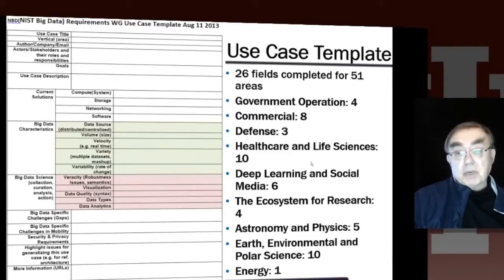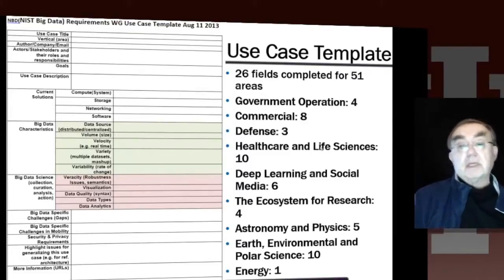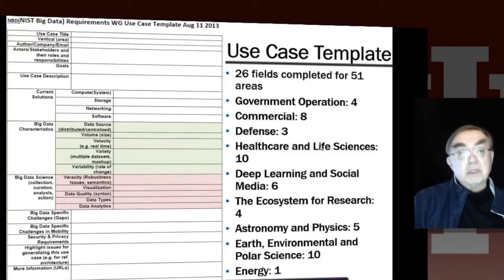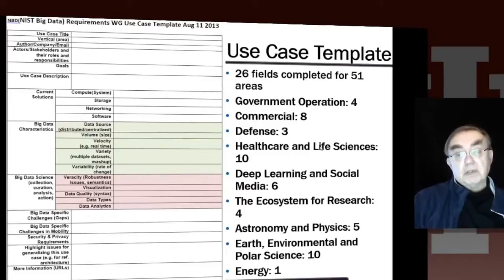These numbers should not be taken seriously as indicators of the importance of big data in certain areas. They just represent who filled in our form. This was all done over roughly six weeks, because we didn't really have the form until the middle of July, and then we started winding down at the end of August to summarize. So this was six weeks of intense activity to gather these use cases.